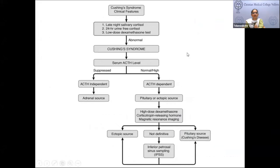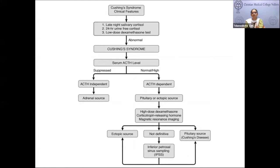In summary of the diagnostic approach: first do a morning cortisol to exclude exogenous steroid abuse, then perform screening tests — midnight serum or salivary cortisol, 24-hour urine cortisol, and low-dose DST. If two tests are abnormal, measure ACTH. Suppressed ACTH suggests ACTH-independent Cushing's; normal or elevated ACTH suggests ACTH-dependent. First evaluate for pituitary; if negative, evaluate for ectopic source with CT of thorax and abdomen or DOTATATE PET scan. If no tumor is localized, inferior petrosal sinus sampling (IPSS) helps differentiate a small undetected pituitary tumor from an ectopic source.